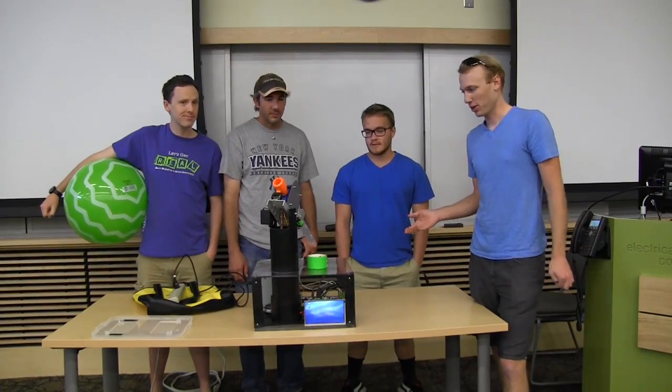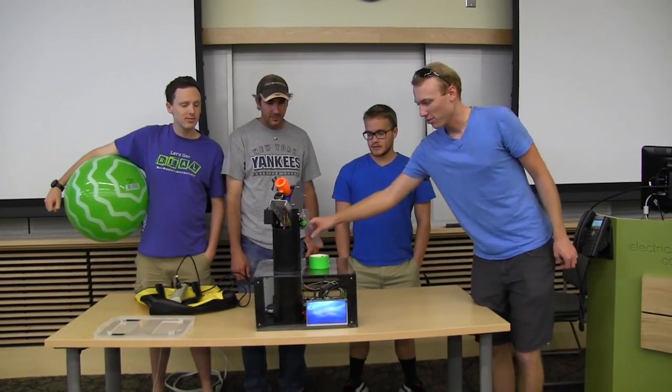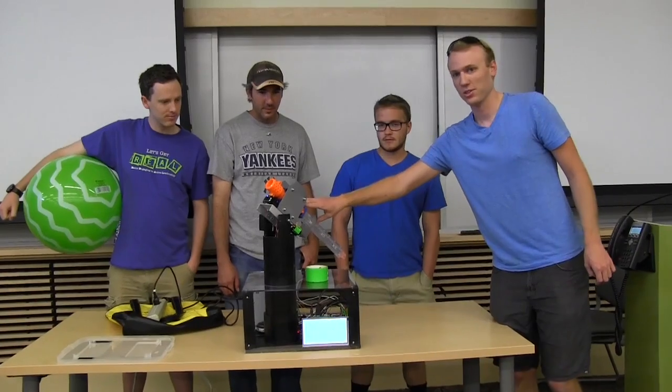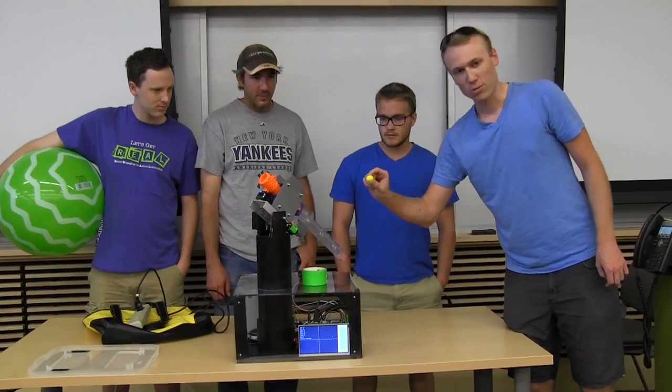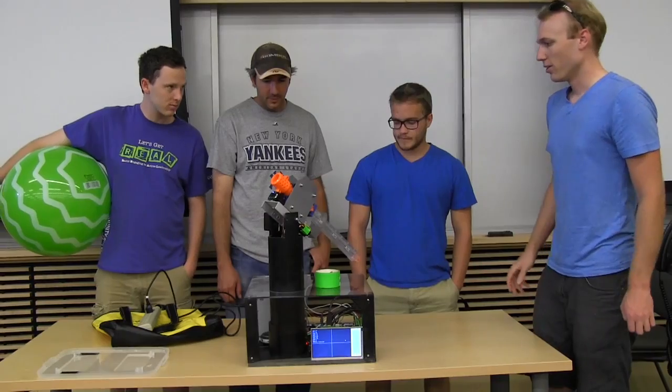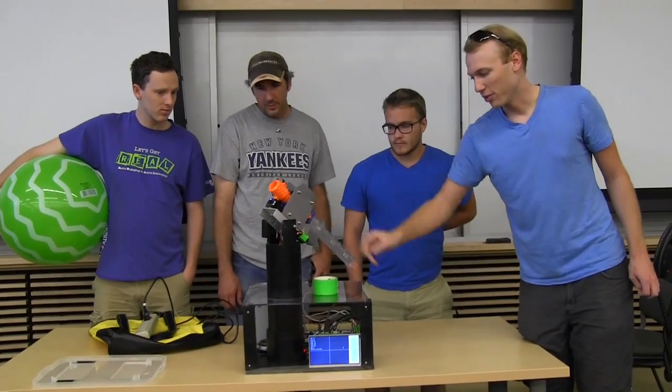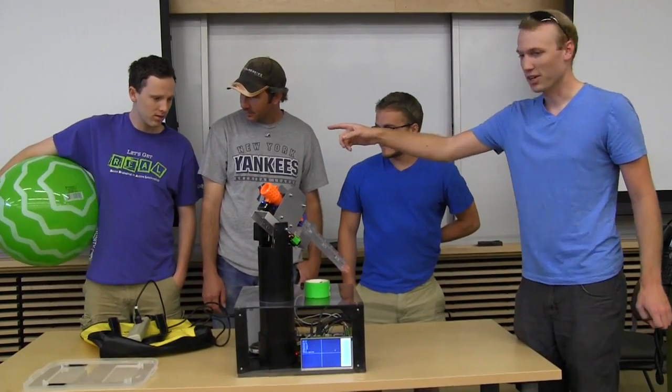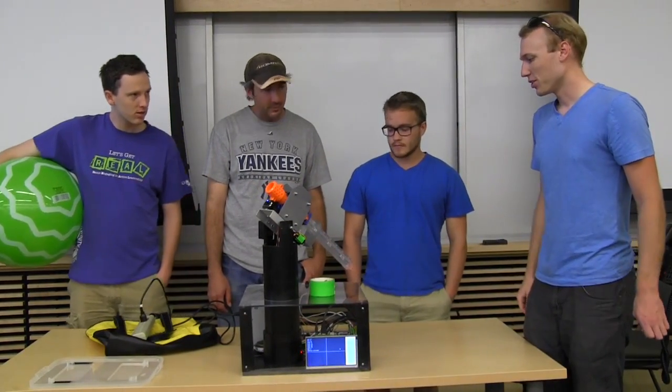This is an automated Nerf turret. It uses largely unmodified internals from a Nerf gun and shoots small foam pellets. The system uses a camera on the front to track a large green target, and when it's locked on, we can shoot balls at it.